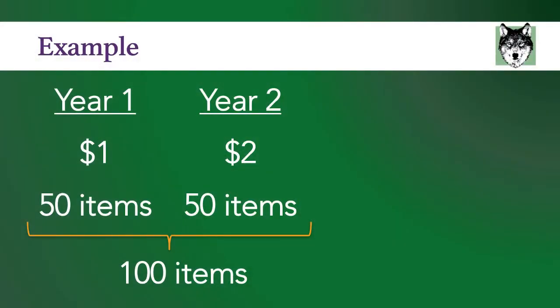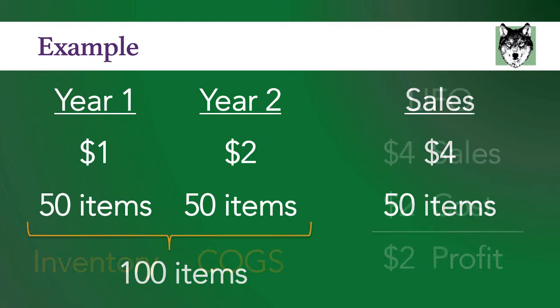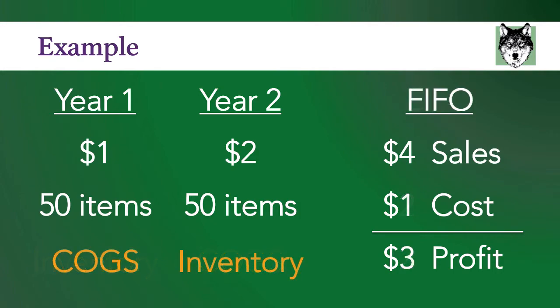Imagine you purchased inventory a year ago at $1 per item for 50 items, and then you purchase again at the end of the year at $2 per item for 50 items. At year end you create your financial statements and you find you sold 50 items at $4 per item. Now you have a choice — you had 100 items in inventory and you sold 50, but which 50? Did you sell the 50 at $1 per item or $2 per item? LIFO says you sold them for $2 for a profit of $2, and FIFO says you sold them for $1 for a profit of $3.